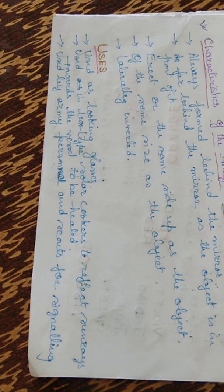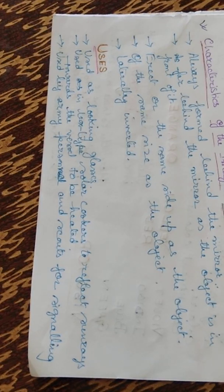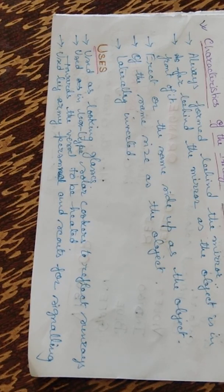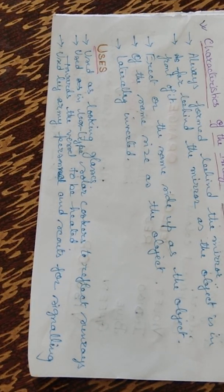The image is erect — the same side up as the object. It is an erect image. As you are standing in front of the mirror, your image will also be in the same way.